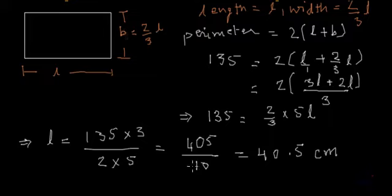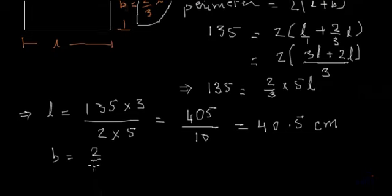And what about breadth? Breadth is 2 third of the length. So B will be equal to 2 third of length. Length is 40.5 cm. So if we divide it by 3, we will get 3 1s are 3, 3 1s are 3, 3 3s are 9 and 3 5s are 15.